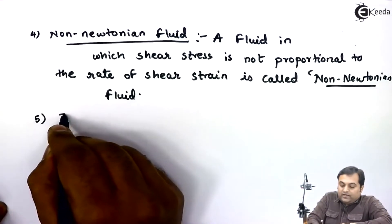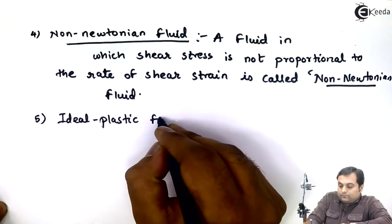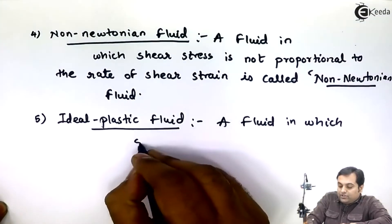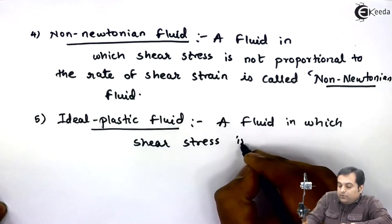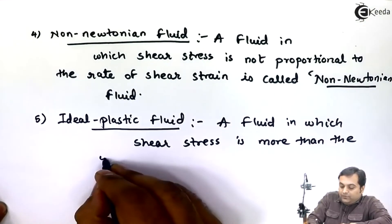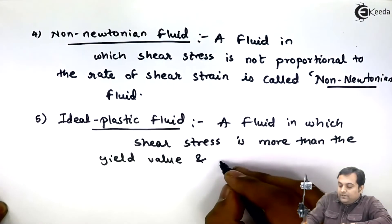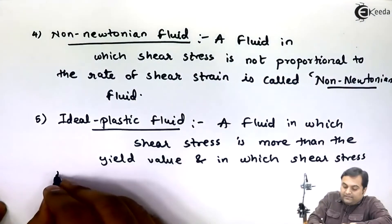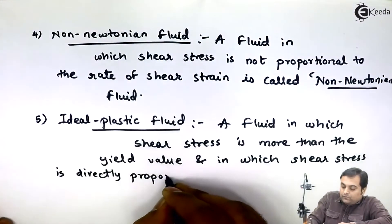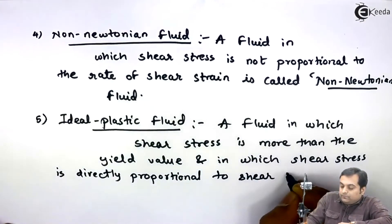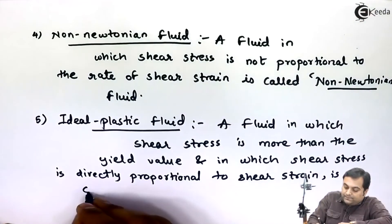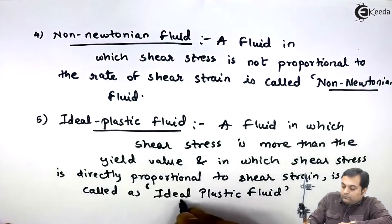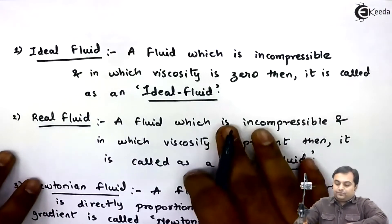The last one is ideal plastic fluid. A fluid in which shear stress is more than the yield value and in which shear stress is directly proportional to shear strain is called an ideal plastic fluid.